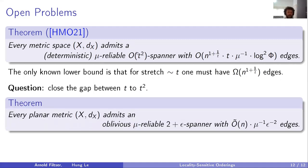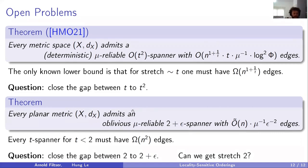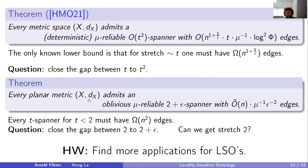Another open question concerns planar graphs: we show that every planar metric admits a mu-reliable (2+epsilon)-spanner with essentially linear edges. Since for any T below two one must have n-squared edges for the uniform metric, it is interesting to understand whether one can reach all the way down to stretch two (as in trees) or whether the number of edges increases as the stretch approaches two. Finally, the most significant open question — your homework — is to find more applications for this new and powerful tool of locality-sensitive orderings. That's it. Bye.